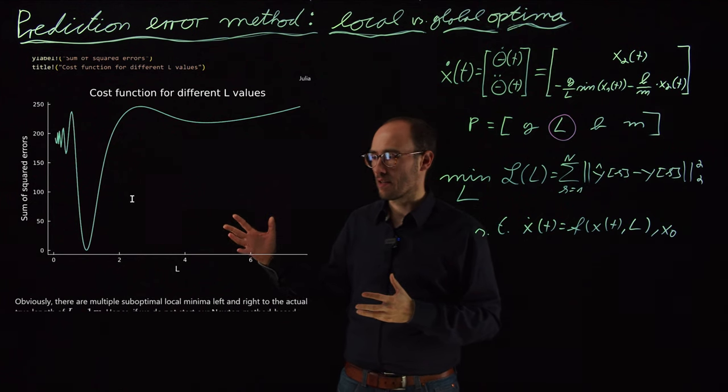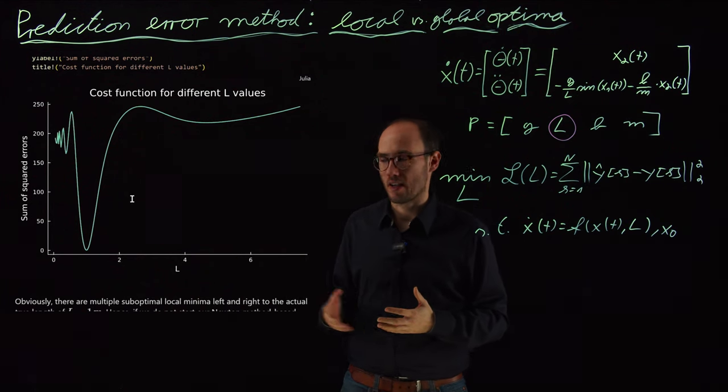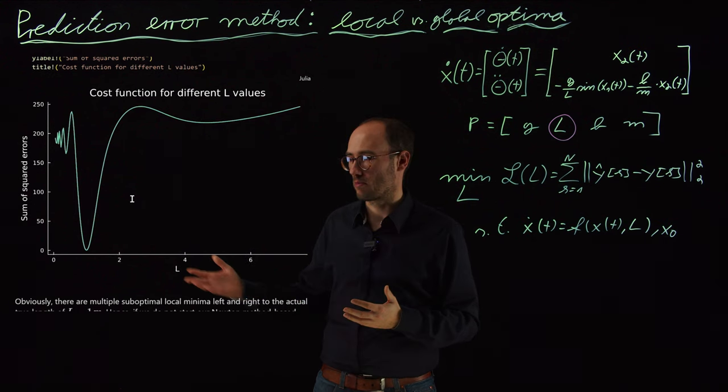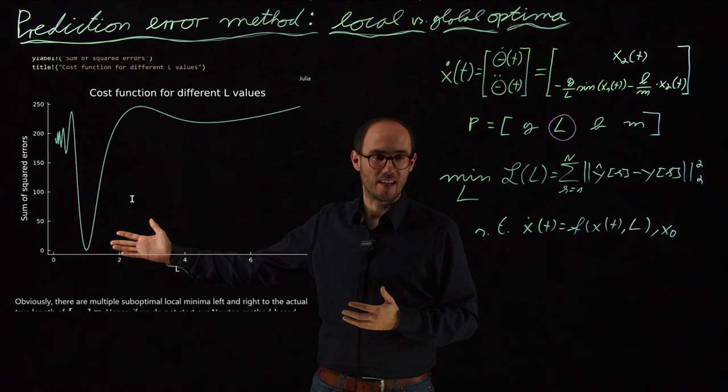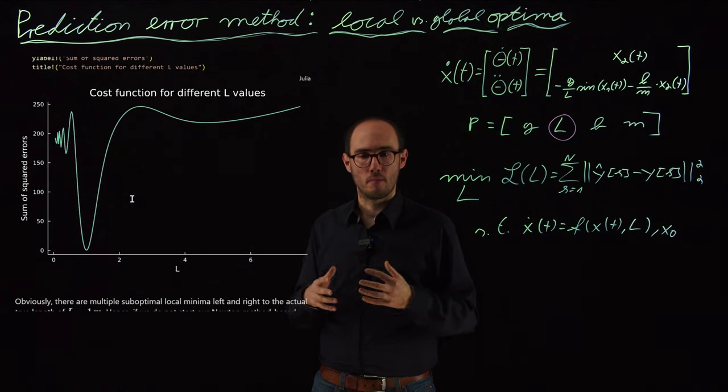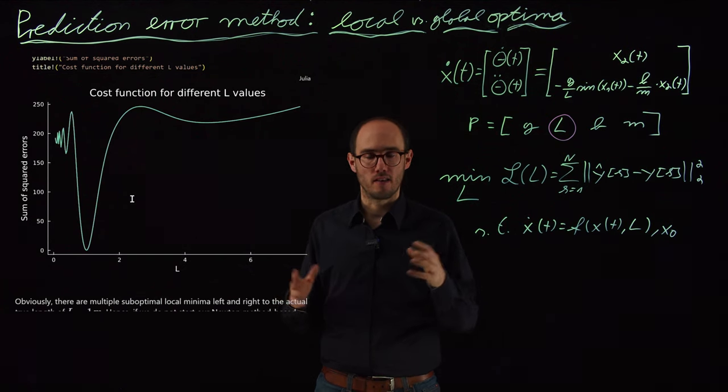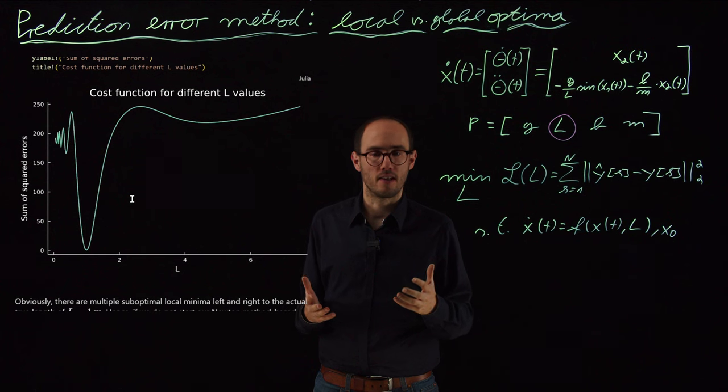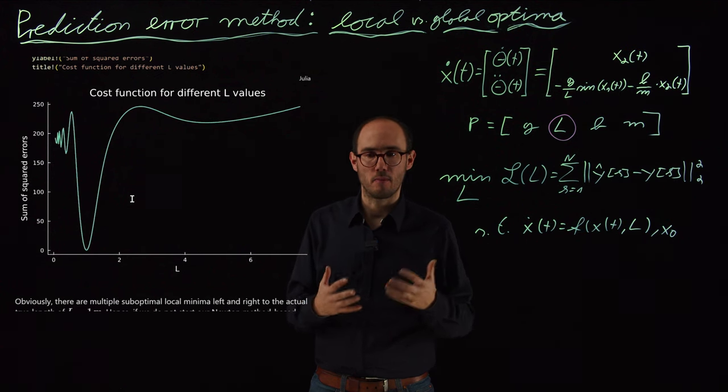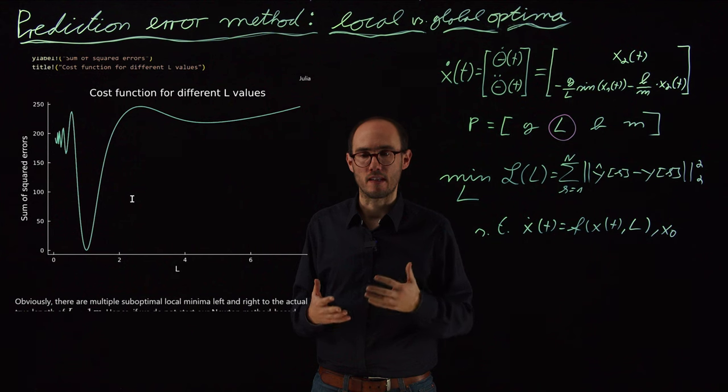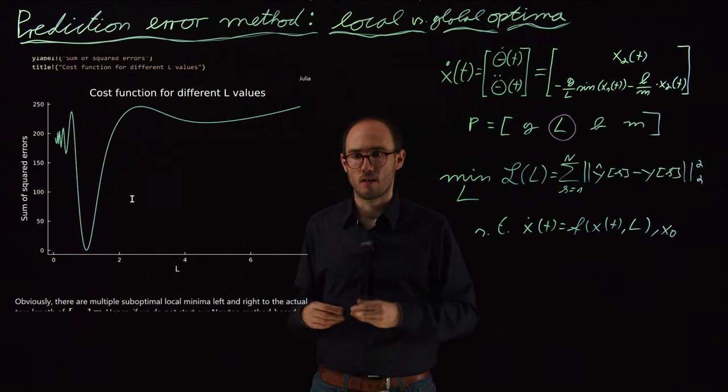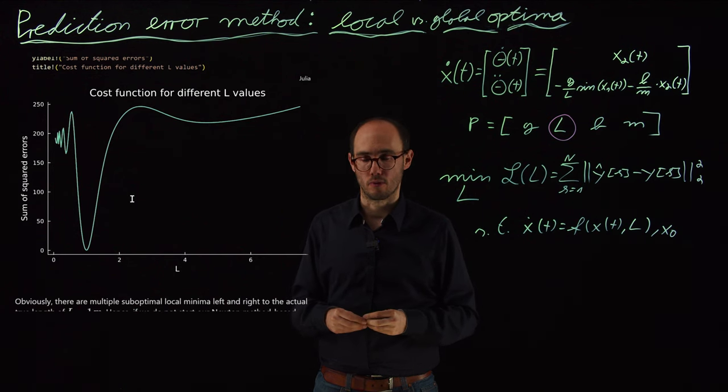Here in this simple one-dimensional case where we can just basically plot this cost landscape easily, that's not a big issue. We could basically just graphically identify the true L, but if you consider high-dimensional problems where the parameters might be hundreds or thousands or ten thousands, that's not easy to plot. So in this case, we need to consider that some of these parameters might have a nonlinear, non-convex impact on the cost function, and that may lead to the local versus global optimum problem.